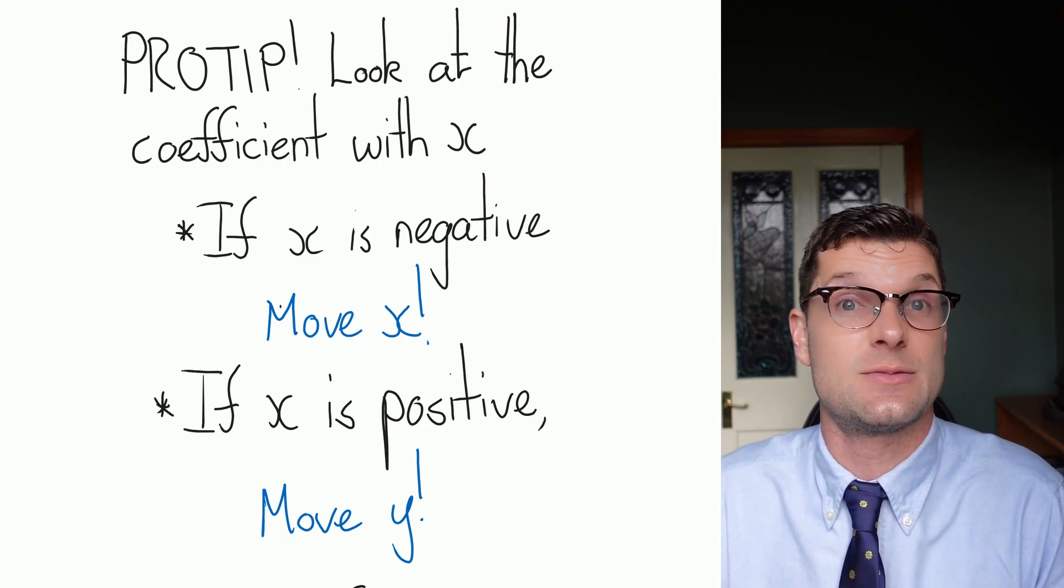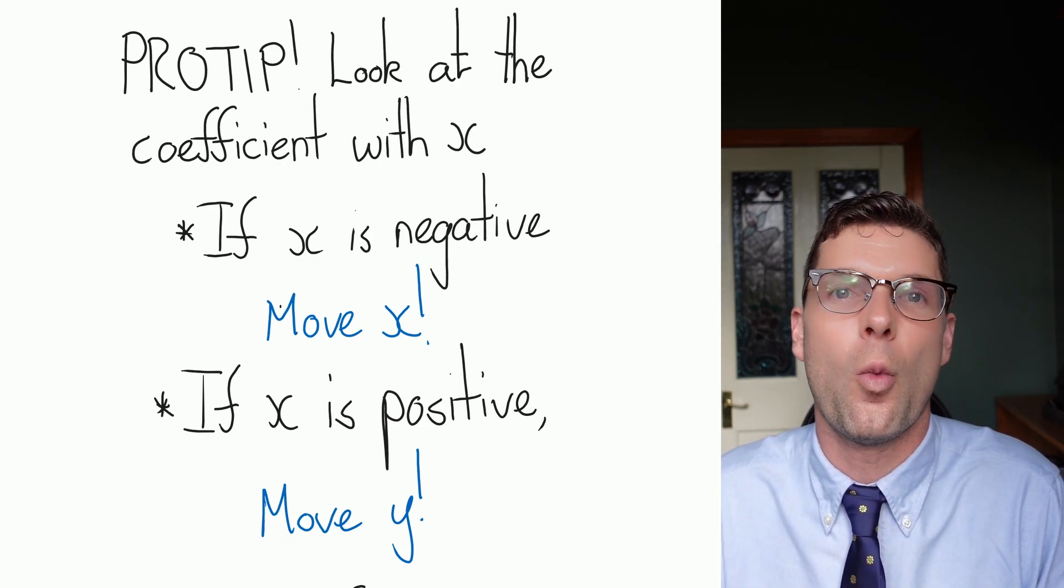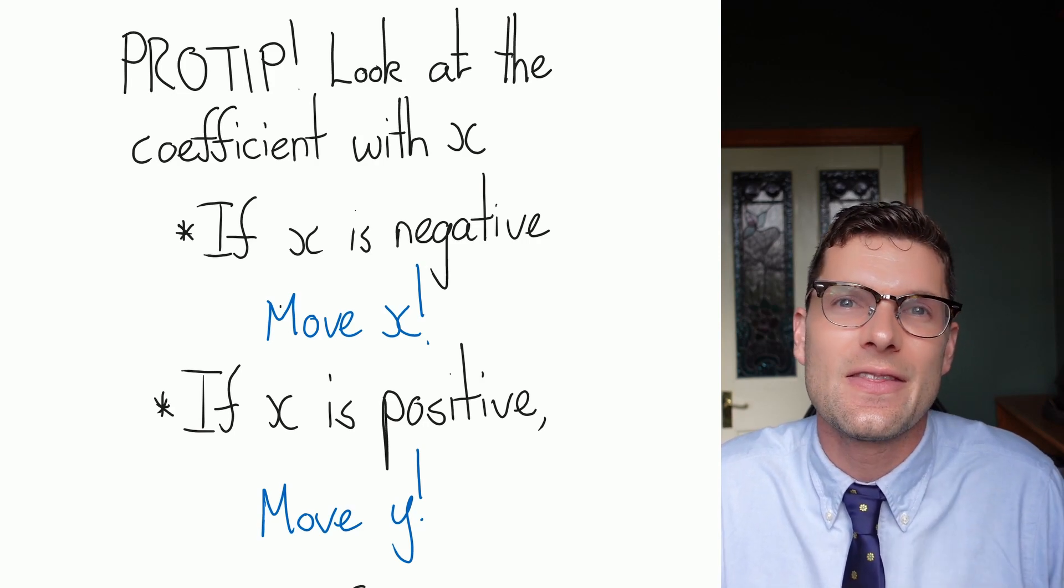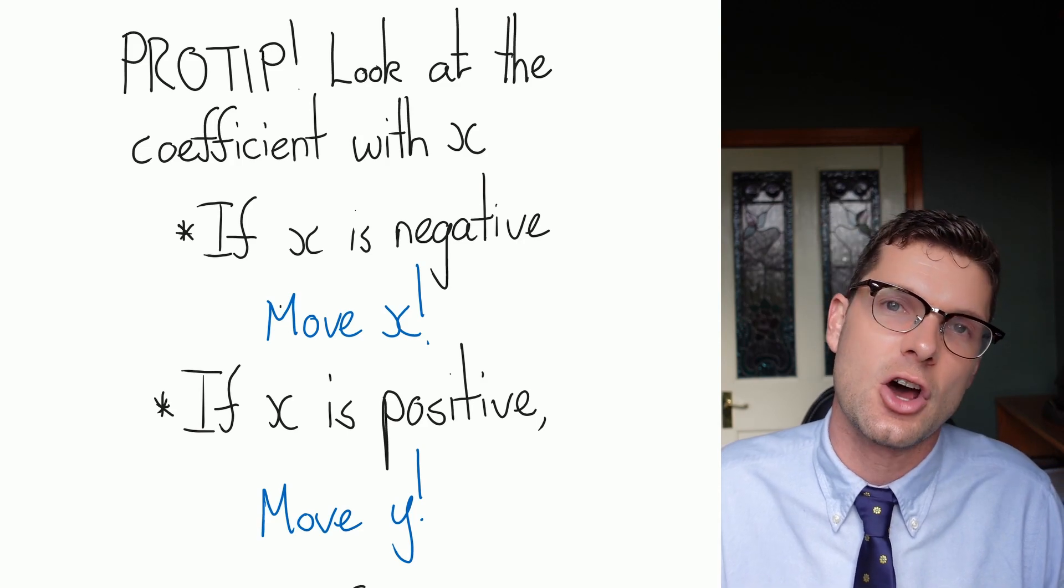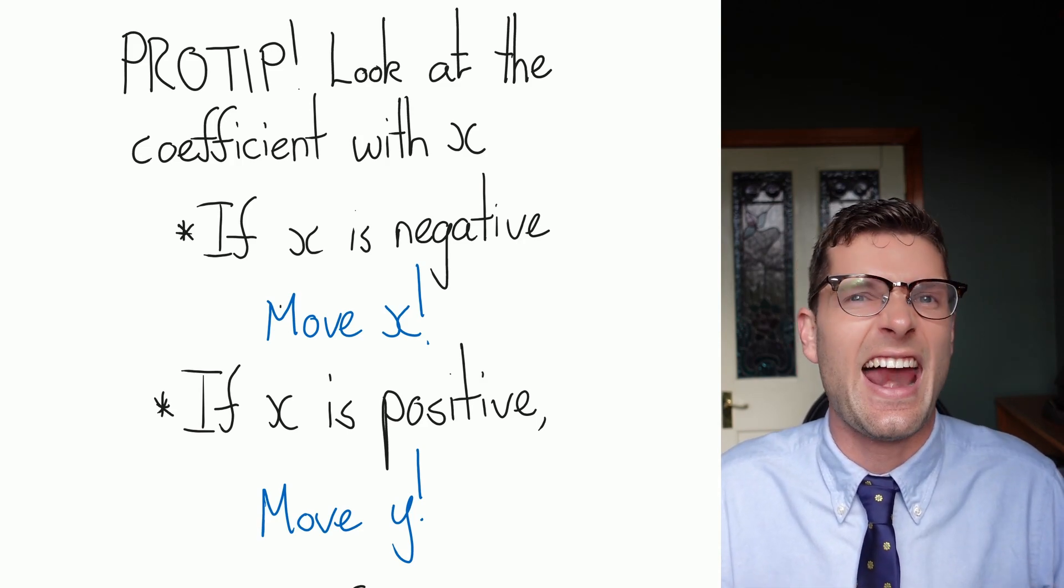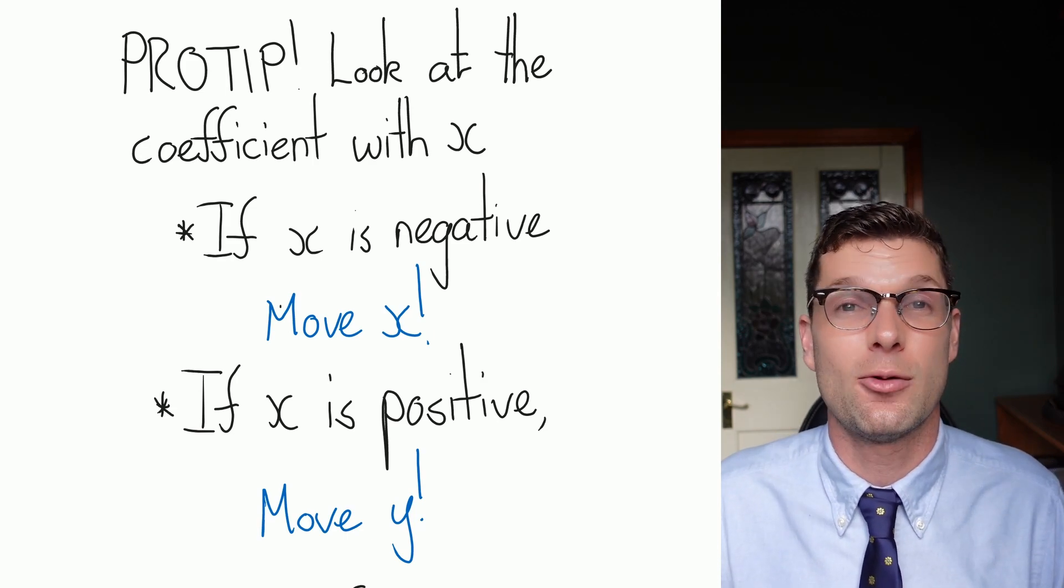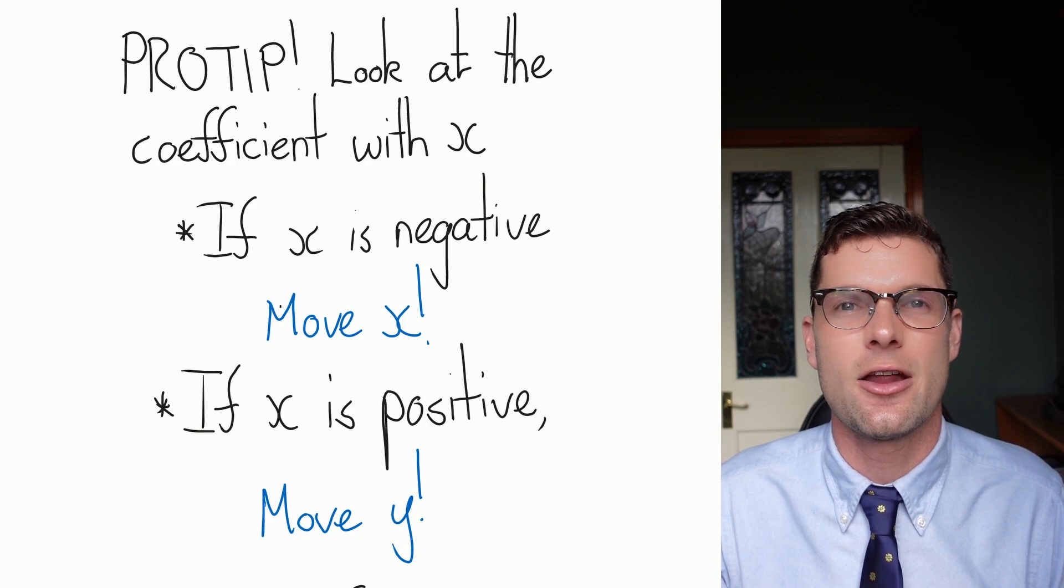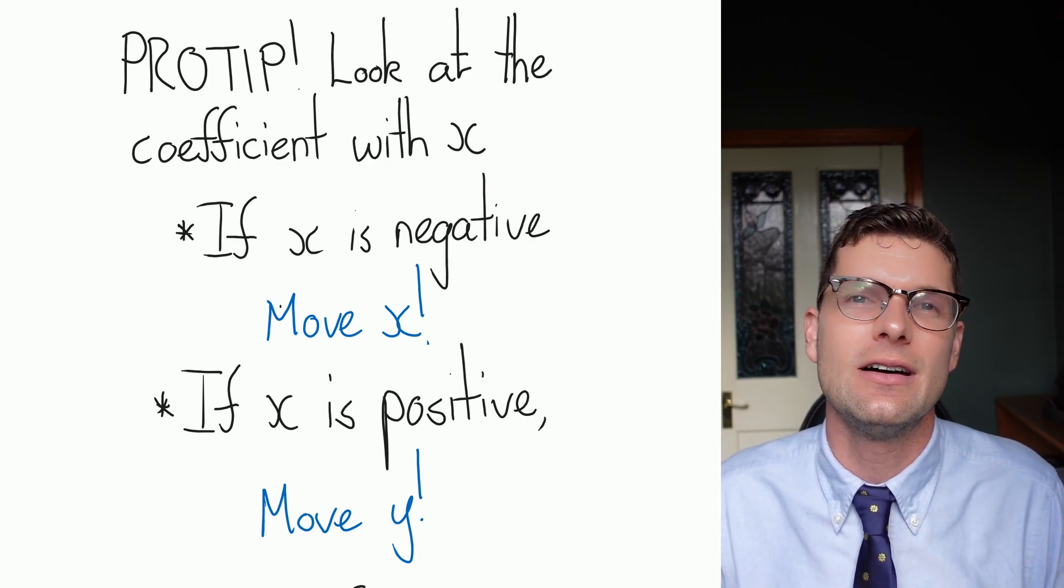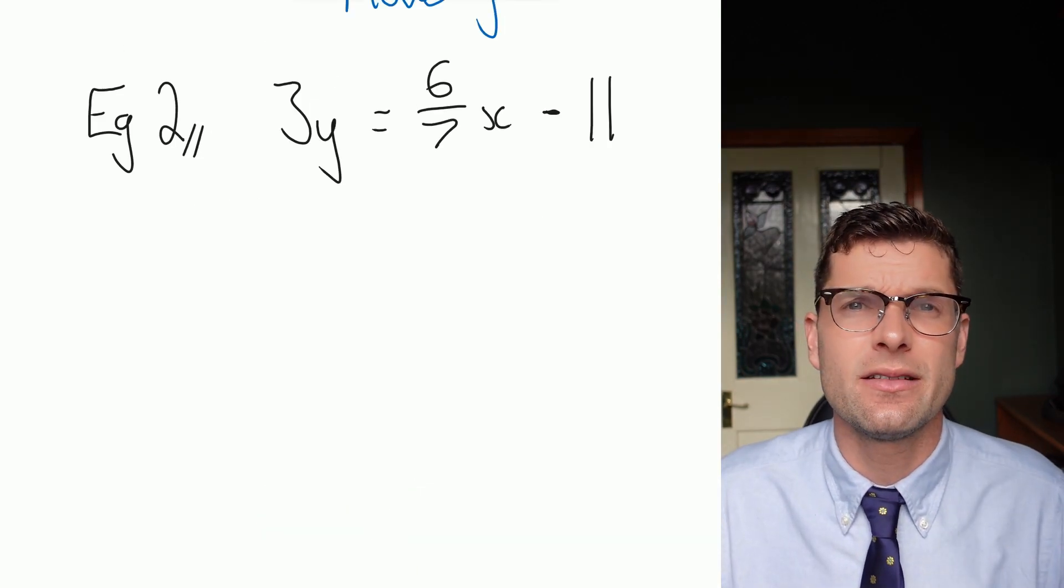However, if you've got x as positive or it has a positive gradient to start off, just move the y over to the other side. This means that there's no confusion as to whether or not you have to multiply by negative one or not. And it'll just mean that you've got to do way less work. So we're just going to have a look at one example where this happens. We're going to have a positive coefficient with the x to start off. If we move that y over, we're going to see it's exactly the same, but we're trying to get rid of one step.